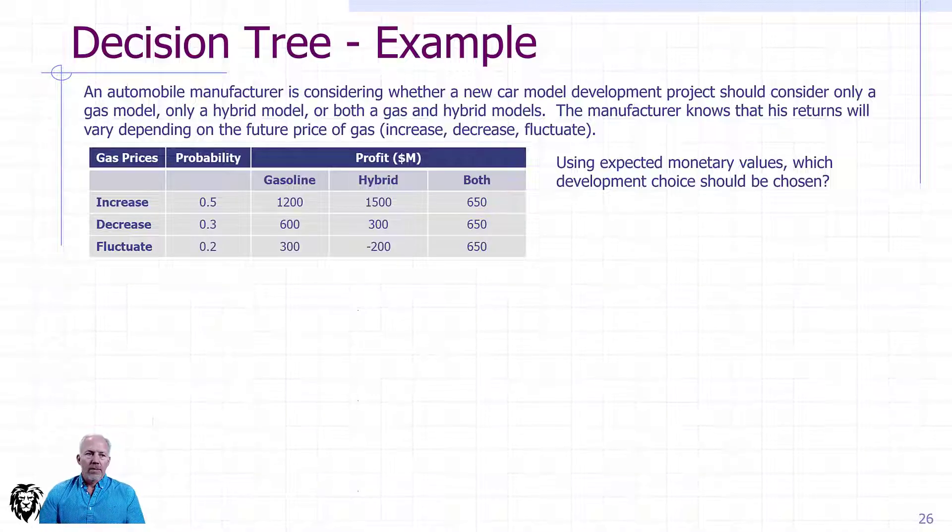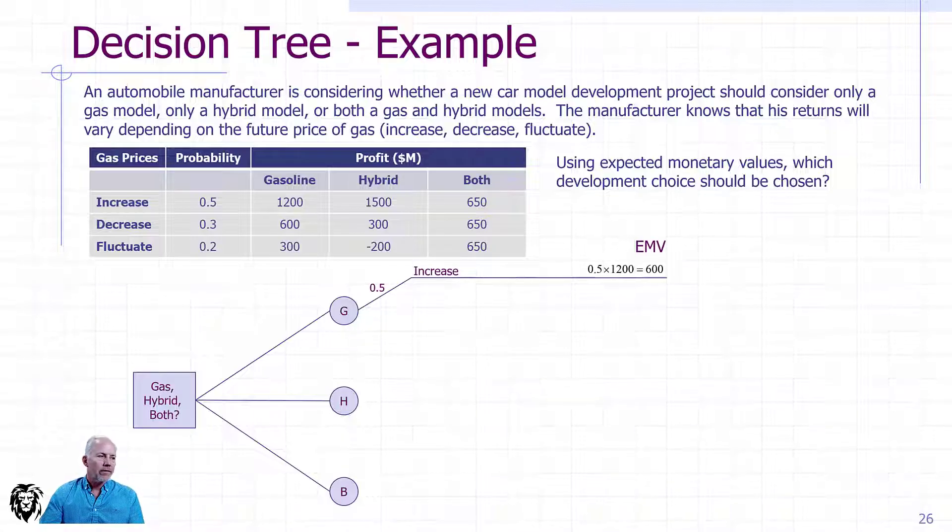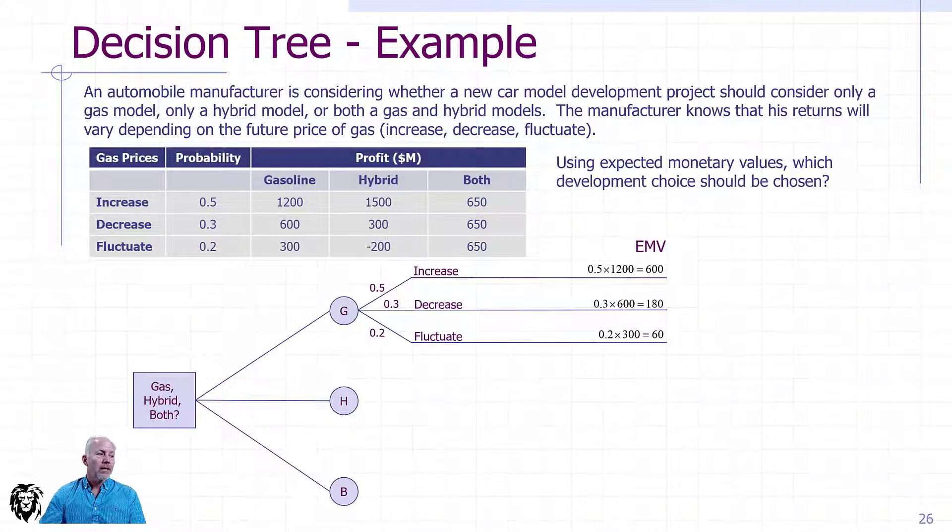We want to build up our decision tree. We have choices: gas, hybrid, or both. We'll start with the gasoline car model. There's a 50% chance that the price of gas will go up. If that's the case, we have 0.5 multiplied by 1,200 million profitability to give us an expected value of 600 million dollars. We do the same thing for the decrease at 30%: 0.3 times 600 million or 180 million is our equivalent value. Finally, fluctuate at 0.2 to get 0.2 times 300 or 60 million dollars. That gives us an equivalent value for the gasoline model choice of 840 million.